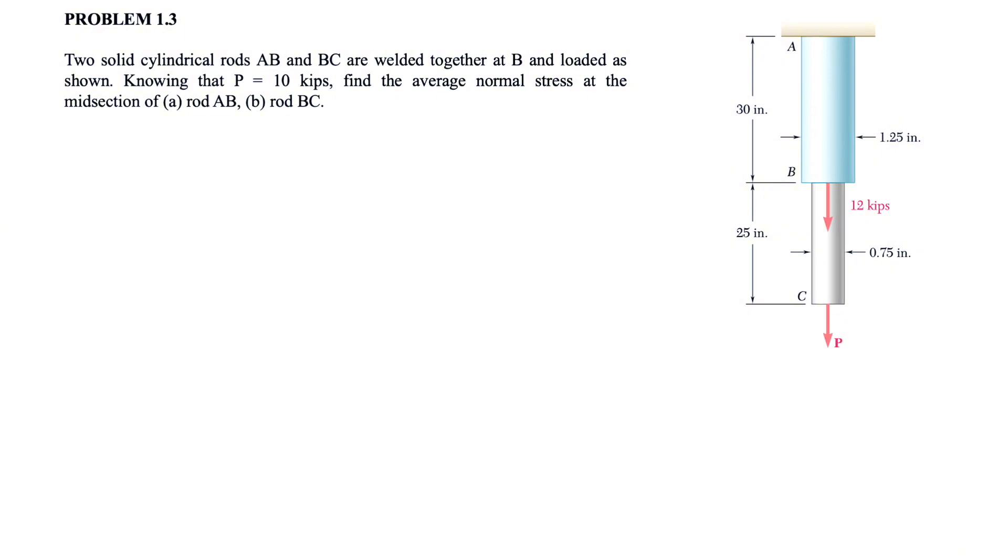We know that P is 10 kips and we need to find the average normal stress at midsection of rod AB and in the B part, rod BC. So as always, we're going to start with writing down the givens.